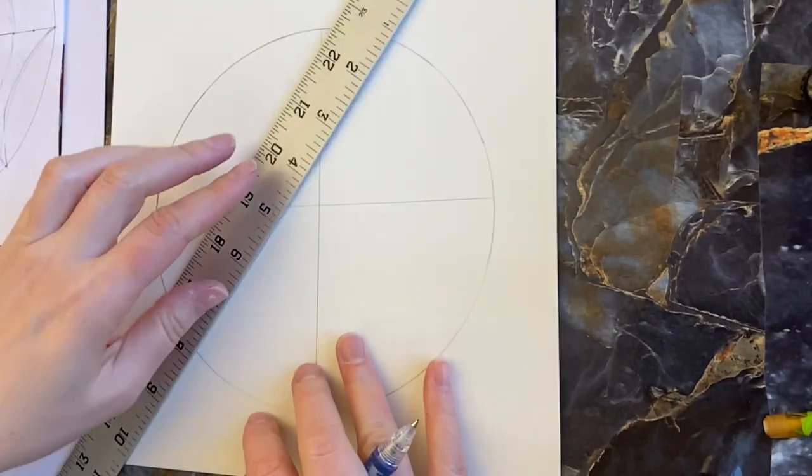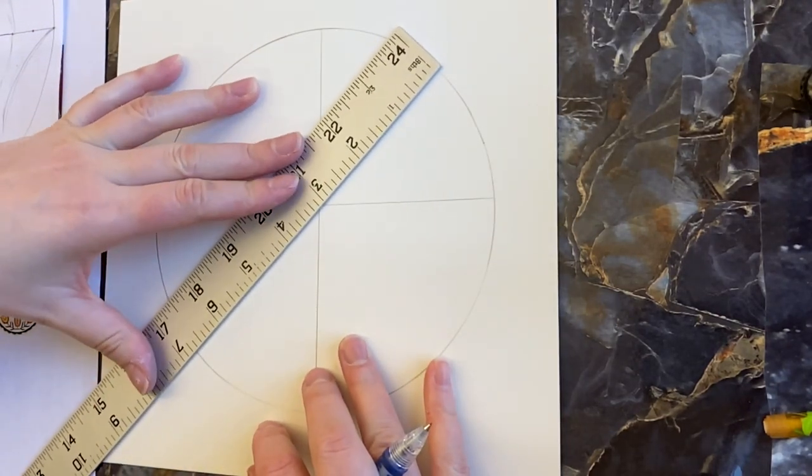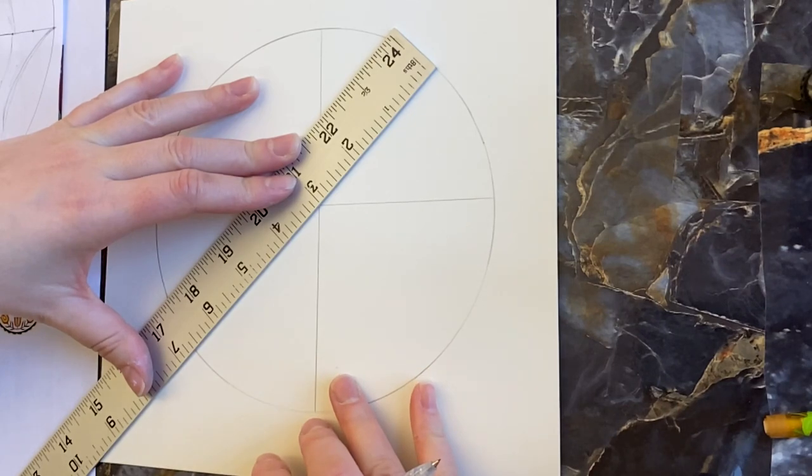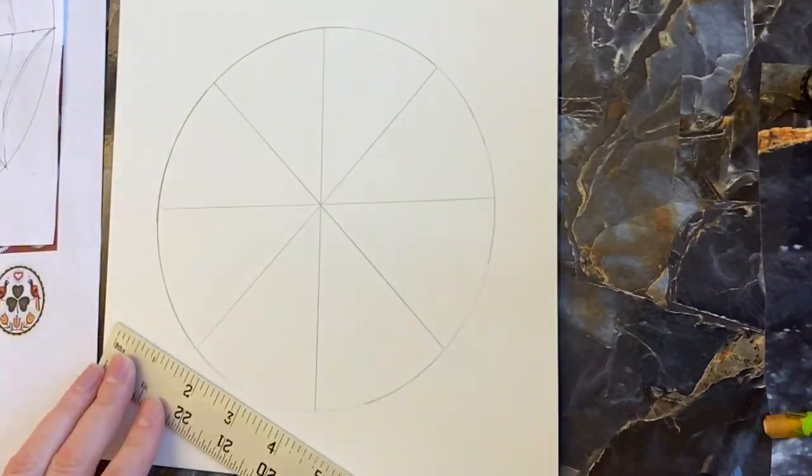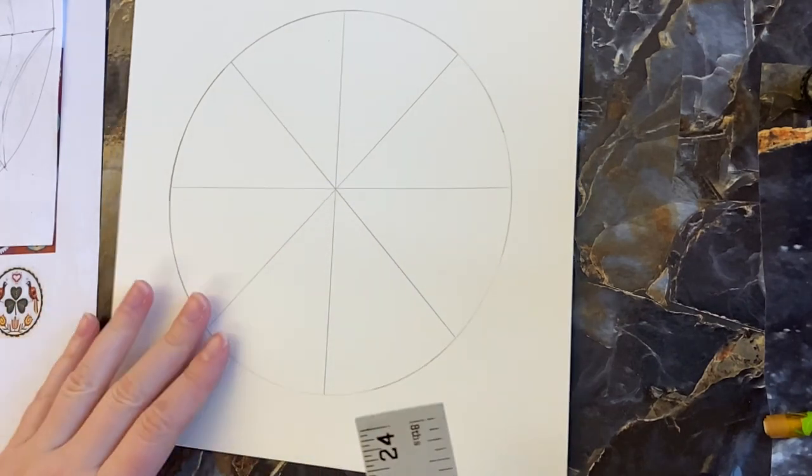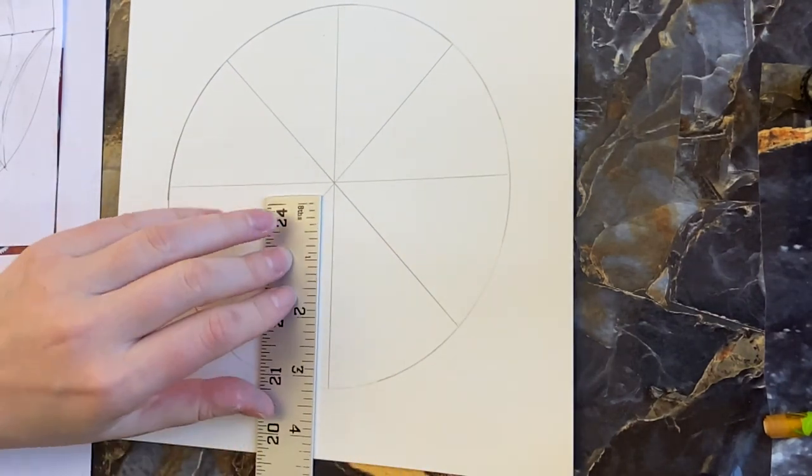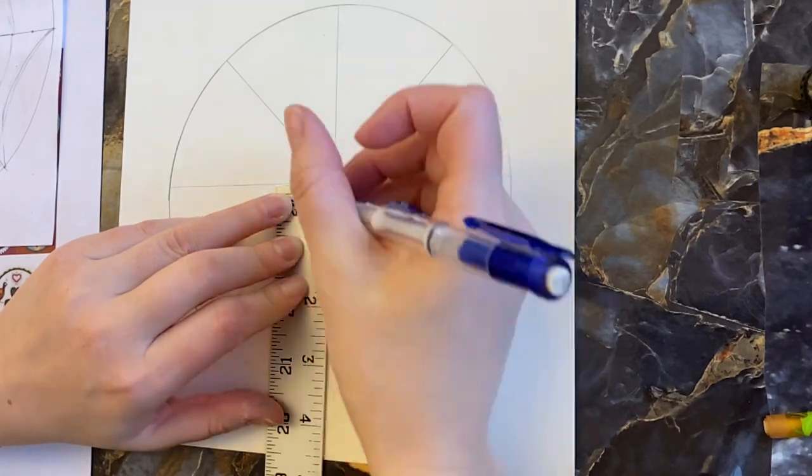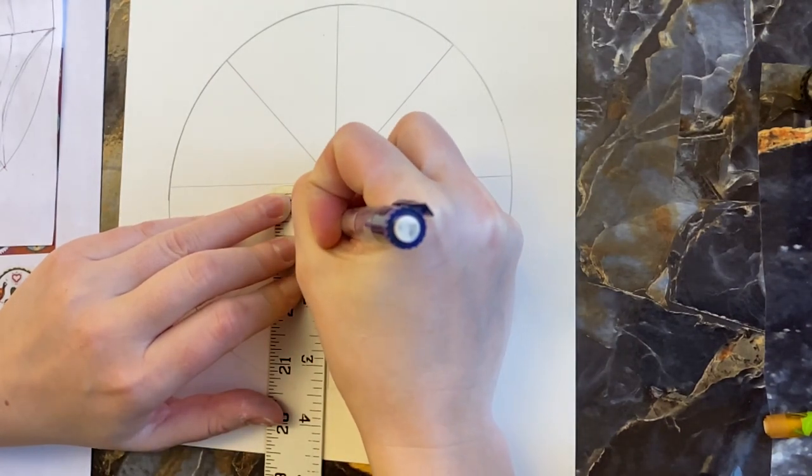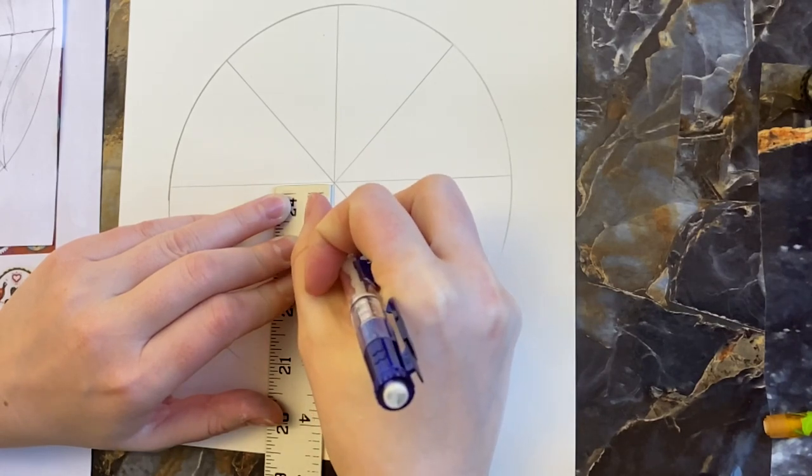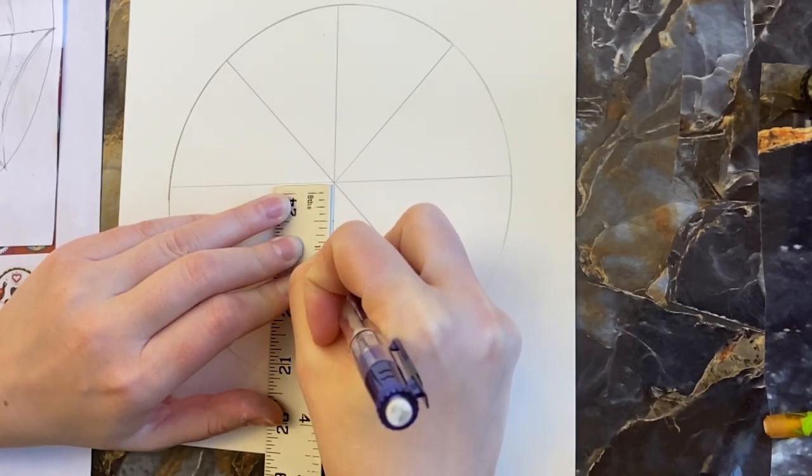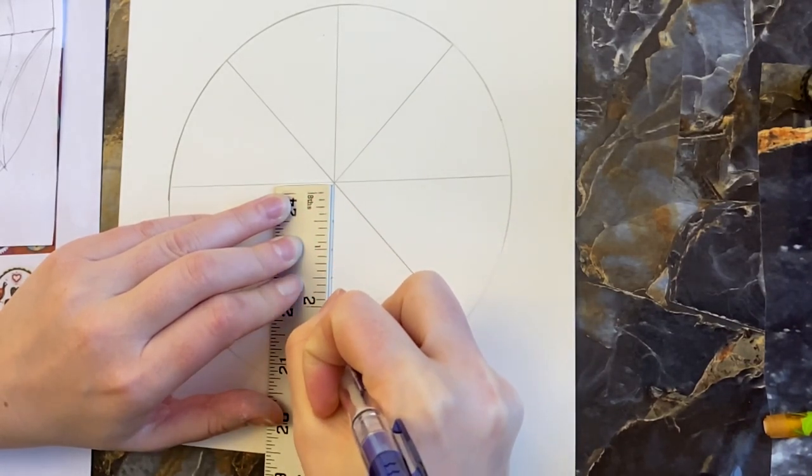Then I'm going to draw two diagonal lines, splitting it again and making sure all lines intersect in the middle. These spaces look pretty equal. The next step is to measure half inches. On my line I'm going to mark little dots for every half inch—half inch, one inch, one and a half, two inches, two and a half, three.